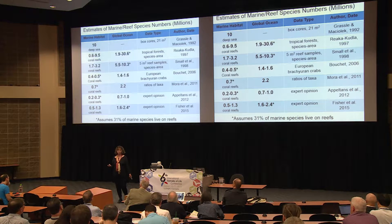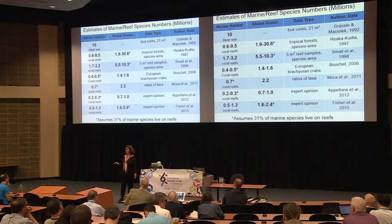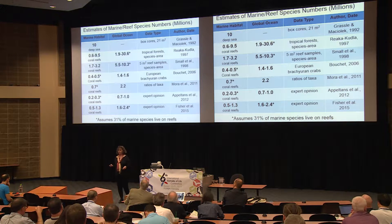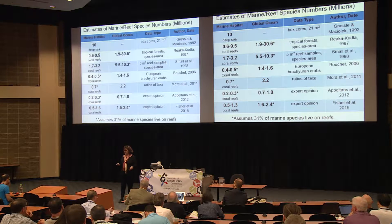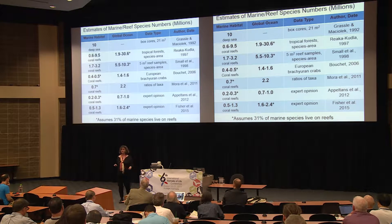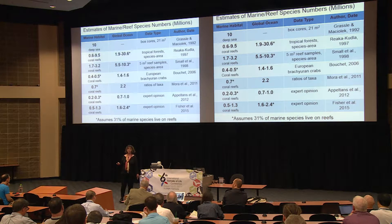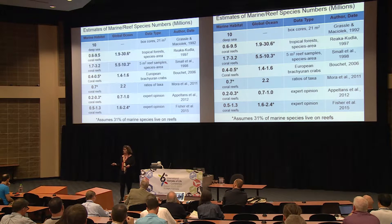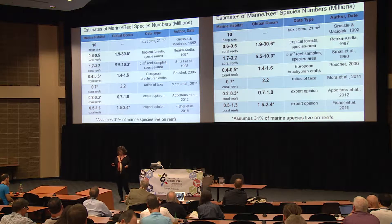Almost none of these estimates are based on actual collection of new data. They're based on extrapolations of area, in some cases from the area of tropical forests, using those estimates to calculate coral reefs, and then recently statistical analyses of ratios of different taxonomic levels, and simply going around and asking systematists how many organisms they think are in the groups they study. So there's very little actual new data being collected to address this question.